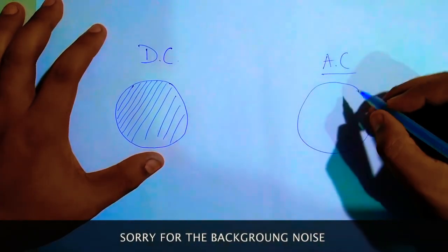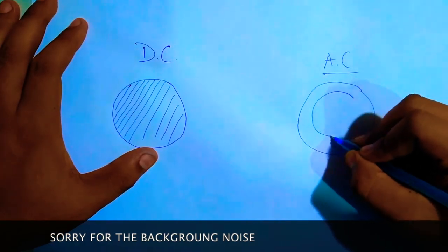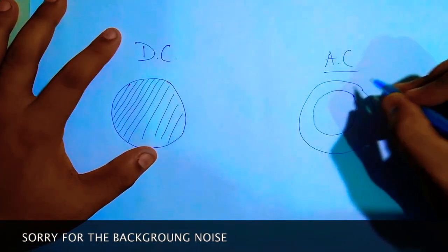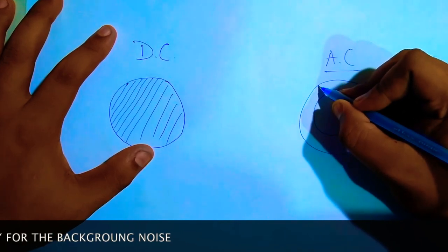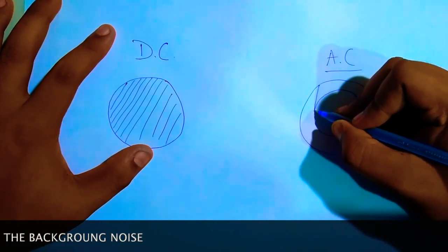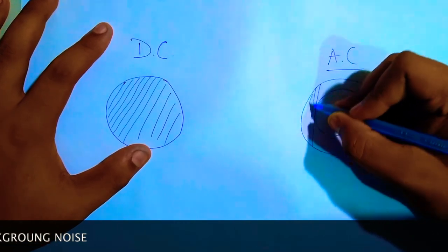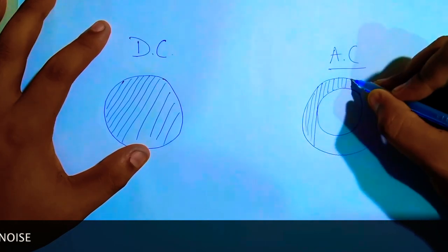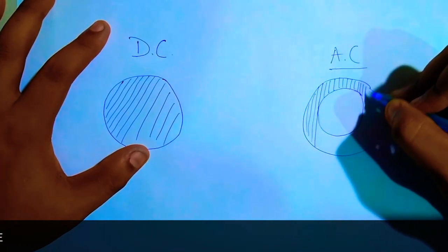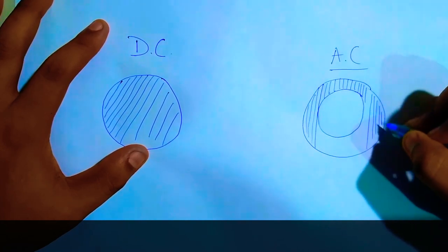But in case of AC, the scenario changes. As the frequency of the alternating current increases, the current starts flowing through the outer surface of the conductor which increases the resistance and is pretty inefficient. This phenomenon is called skin effect.